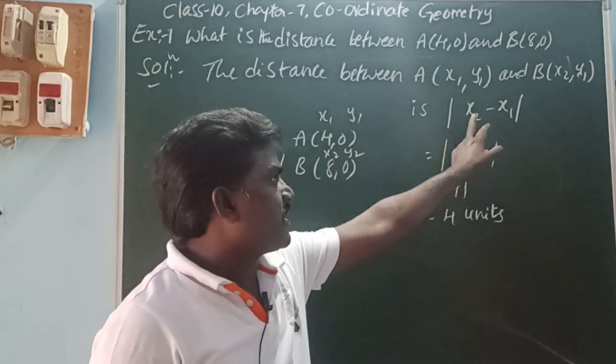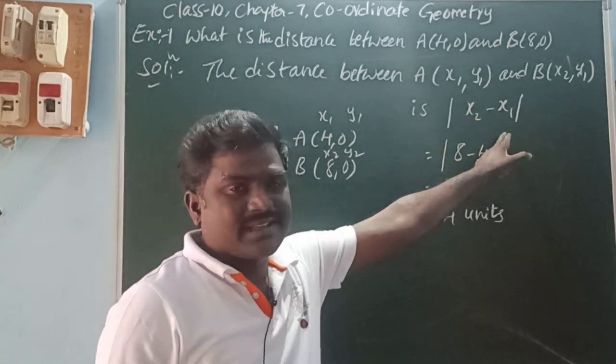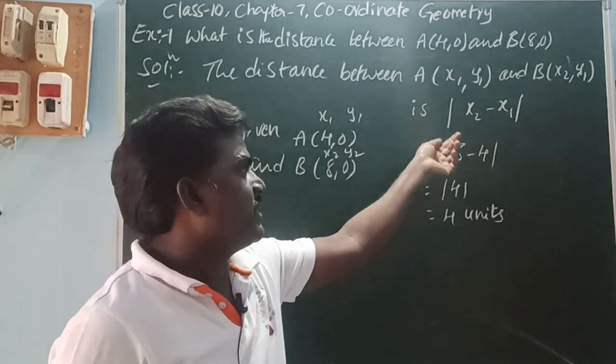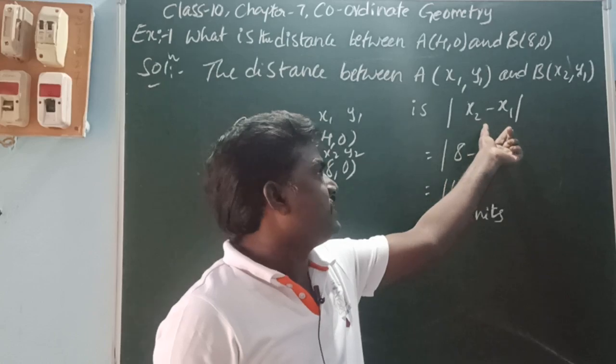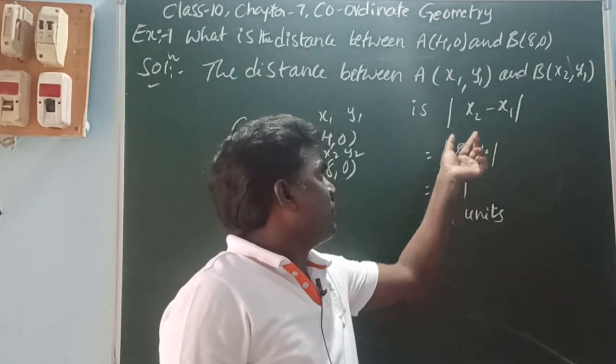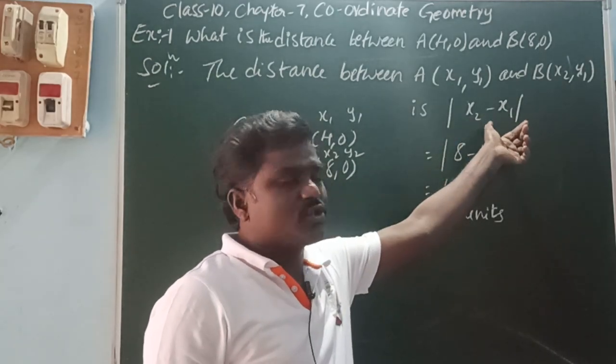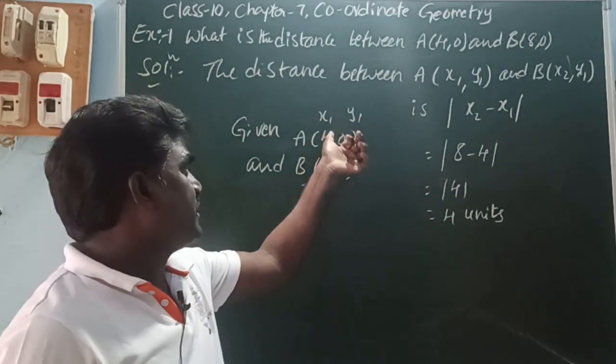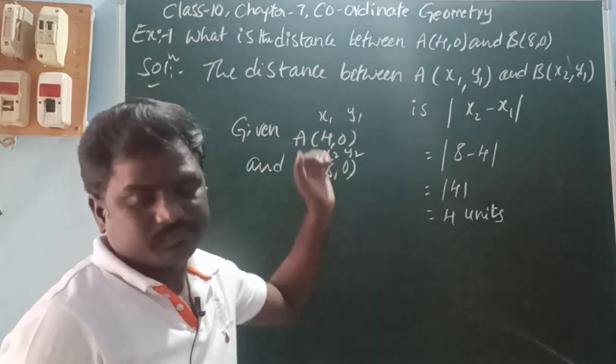Modulus of x2 minus x1: if the y-coordinate is the same, the distance between two points is modulus of x2 minus x1. Here x2 is 8 and x1 is 4.